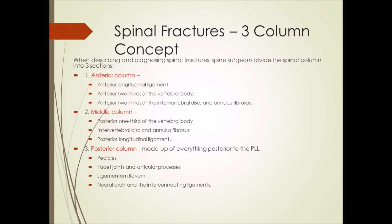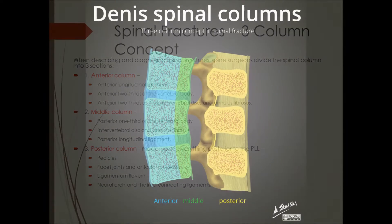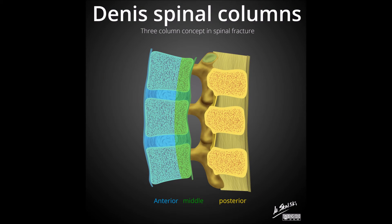The third and last is the posterior column, which is made up of the pedicles, the facet joints and articular processes, the ligamentum flavum, the neural arch, and the interconnecting ligaments. A visual representation of the Denis classification is shown here.